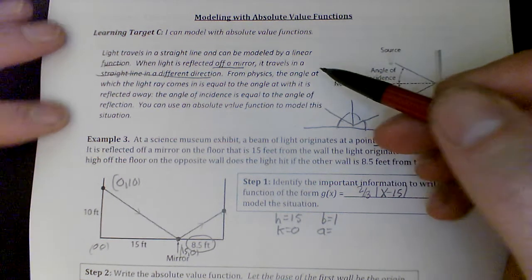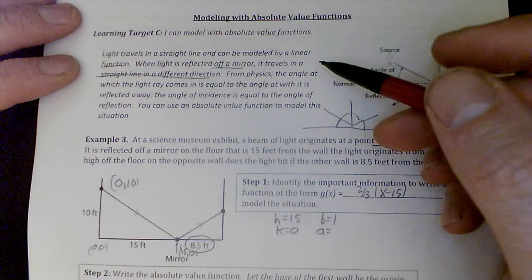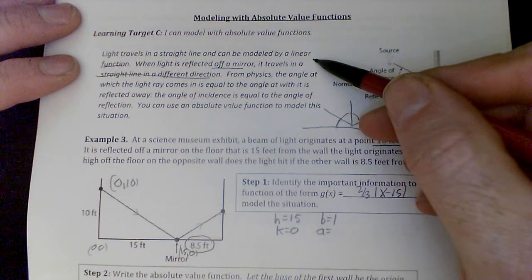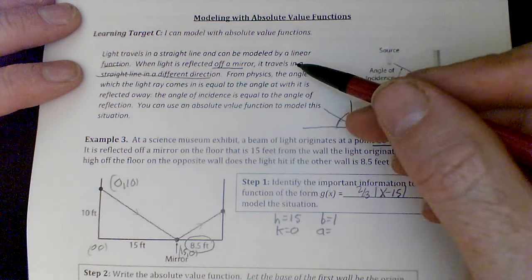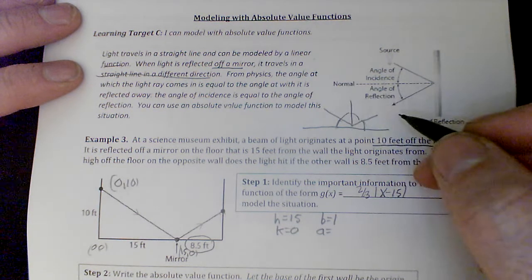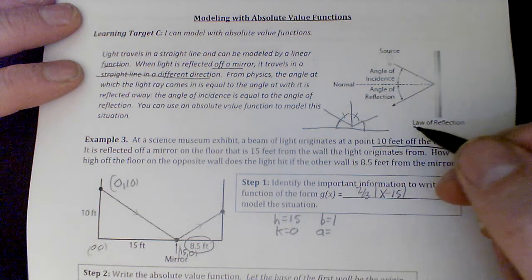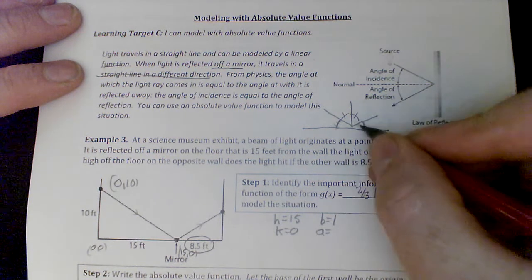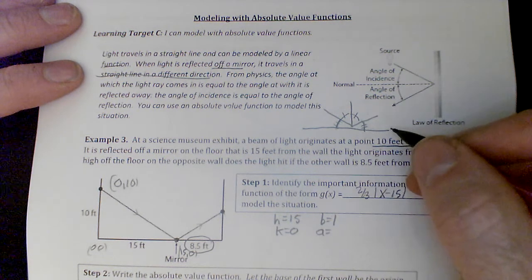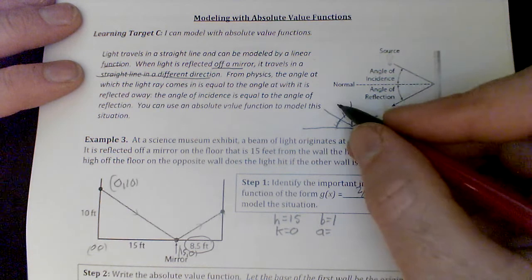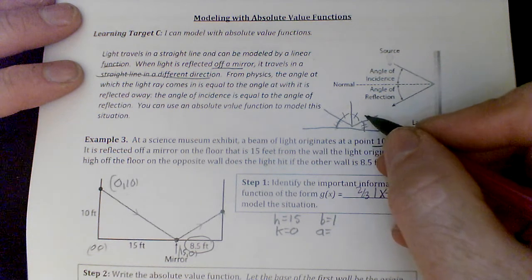They gave us a little intro to this. Light travels in a straight line and can be modeled by a linear function. When it's reflected off a mirror, it travels in a straight line, and these angles, like that angle, is the same as that angle. We could say these angles down here are the same as well. The angle of incidence and the angle of reflection are always going to be the same.